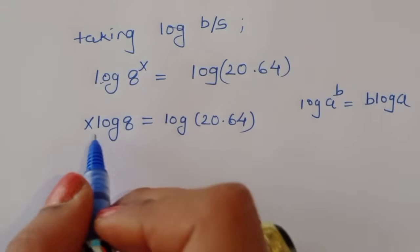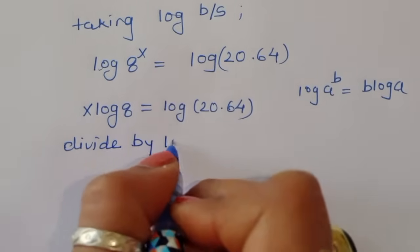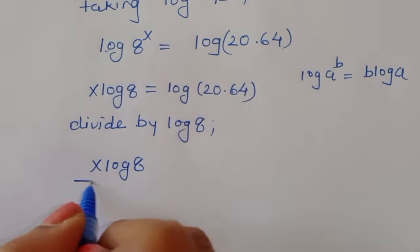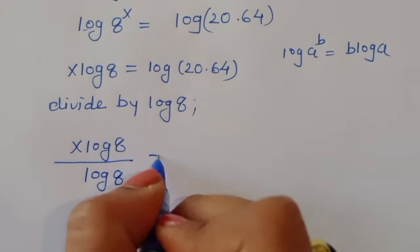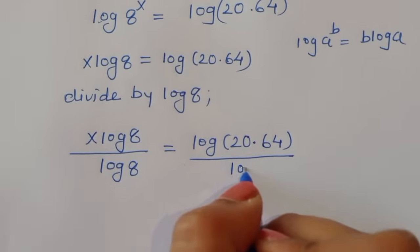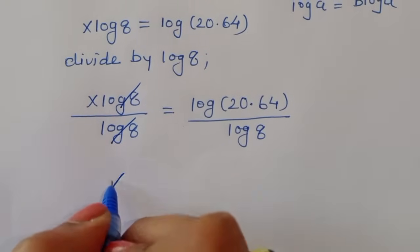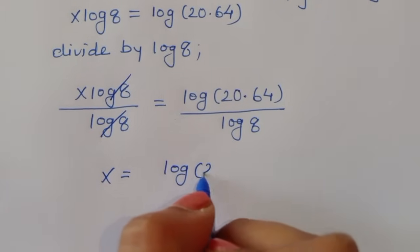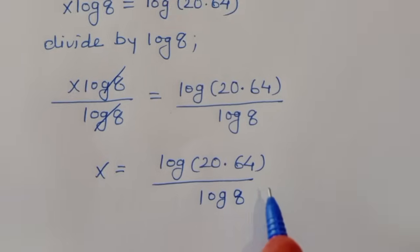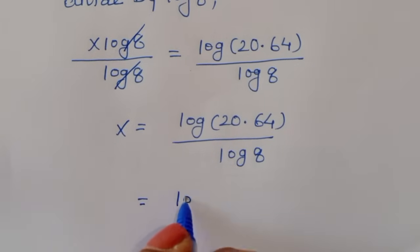To remove log 8, we divide both sides by log 8. So x log of 8 divided by log of 8 is equal to log of 20 times 64 divided by log of 8. This simplifies to x is equal to log of 20 times 64 divided by log of 8.